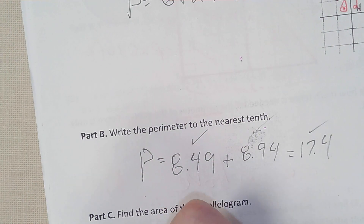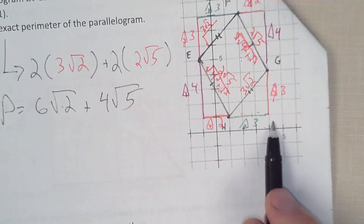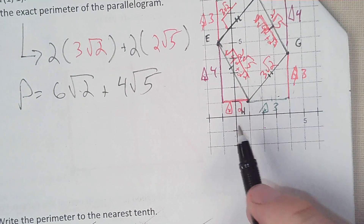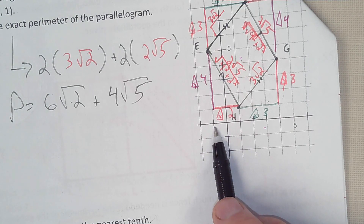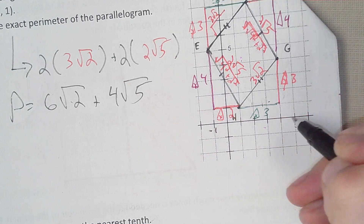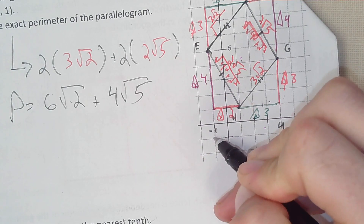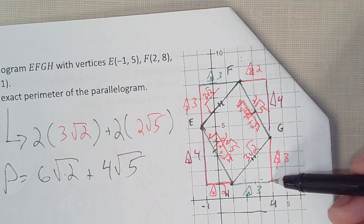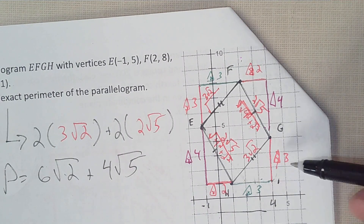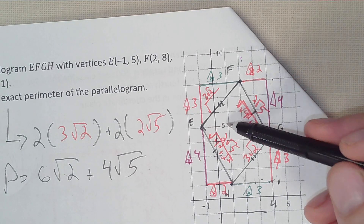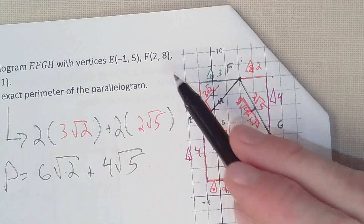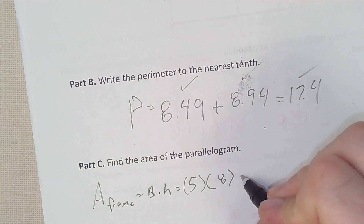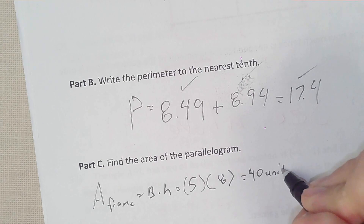The area of the frame equals base times height. The x-range goes from negative 1 to 4, so the base is 5. The y-range goes from 1 to 8 — 8 is the highest y-value — so the height is 7... actually, that length is 5 and the height is 8. So 8 times 5 equals 40 units squared.